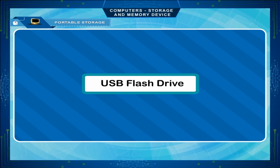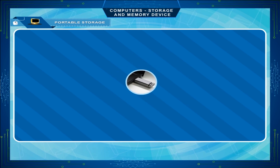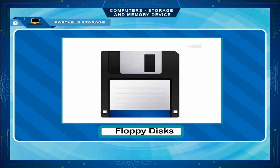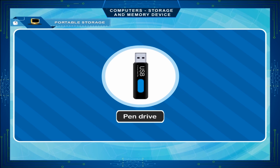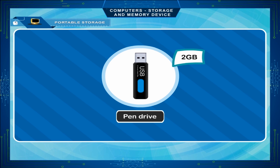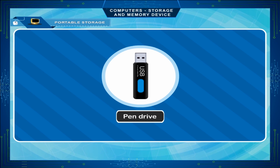A USB flash drive is popularly known as a pen drive. It is a plug-and-play device used for copying and moving data from one computer to another. It has replaced floppy disks as it is very small, lightweight, and rewritable. It can be attached to any USB port and has a storage capacity ranging from 2 GB to 32 GB or more. Flash drives are smaller, faster, and more reliable.